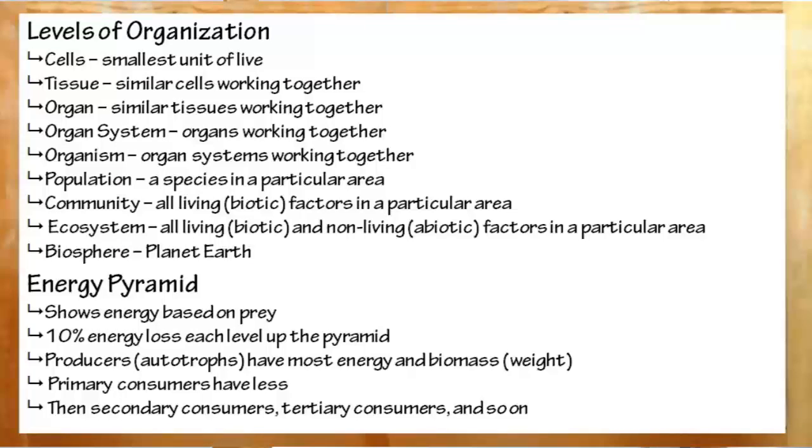Next up are the primary consumers. Anything that's not a producer is a consumer, and is a heterotroph. Primary consumers eat the producers. Then, moving further up, you get secondary consumers, tertiary consumers, quaternary consumers. Every time you make a step up the pyramid, it's a 10% energy loss.